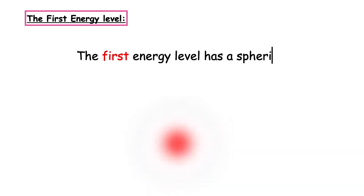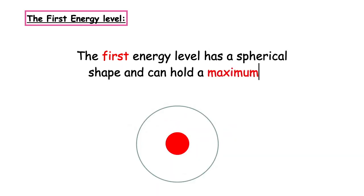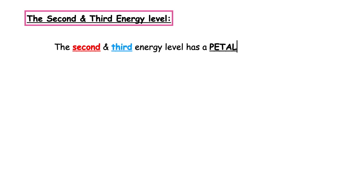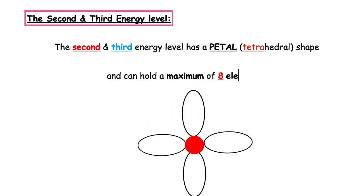If the outermost occupied energy level is the first energy level, it has a spherical shape and can hold a maximum of two electrons. If the outermost occupied energy level is the second or third energy level, we represent that by a petal shape which is known as a tetrahedral. Remember the word tetra means four, so the petal has four petals and it can hold a maximum of eight electrons.